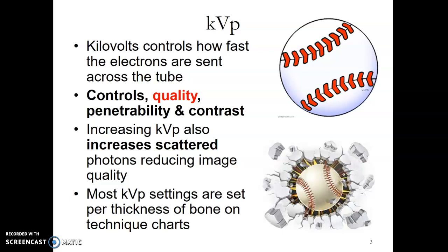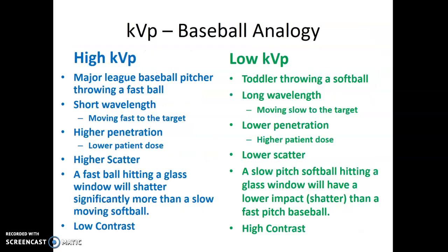I was taught a baseball analogy from one of my clinical instructors for KVP. High KVP — what exams do we use high KVP for? Chest x-rays. We use that high KVP, low MA setting. If you think of a major league baseball player throwing a fastball, high KVP is going to have a short wavelength. That fastball is moving fast to the target. That 117 KVP you're using on a chest x-ray is going to have higher penetration — it's going to move through that patient faster, which means lower patient dose.